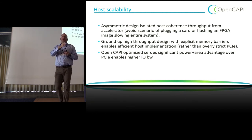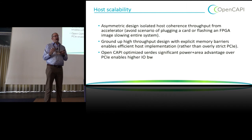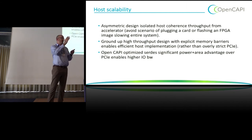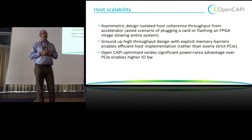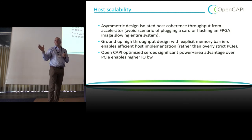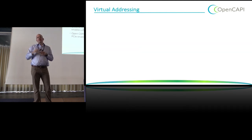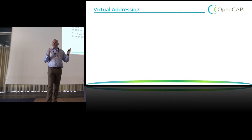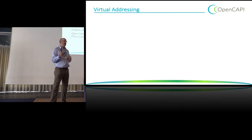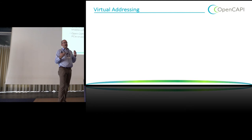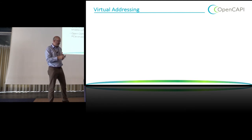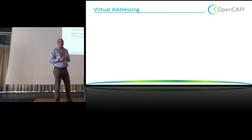PCIe also has complicated legacy-based ordering rules that make streaming data at high bandwidth difficult — you have to expose all your writes in specific orders. Instead of taking PCIe and trying to make it run faster, OpenCAPI makes ordering rules much more explicit: the accelerator indicates what it cares about ordering and what it doesn't. To get high bandwidth, you really need to not say every single write needs to be in order. That's how we build host scalability — enabling accelerators to indicate only what needs to be ordered.